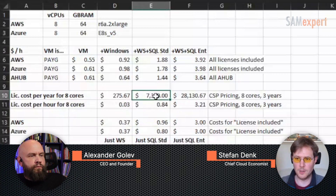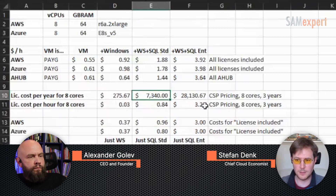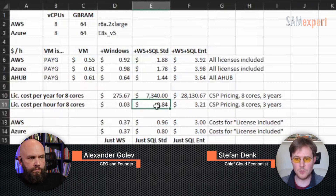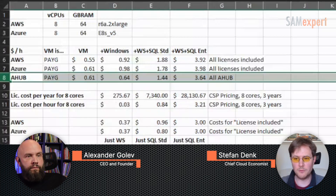Continuing the comparison with three-year packs: I took the cost of a two-core pack over three years times four, because I need eight cores. It turns out that both SQL Standard and SQL Enterprise are more expensive than the pay-as-you-go rate in Azure. But because AWS is 20% more expensive, the CSP three-year pack actually lands in between what you would pay for Azure license-included and AWS license-included.